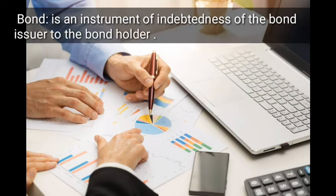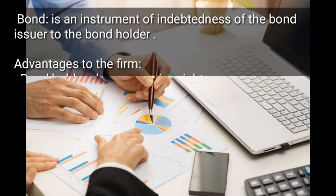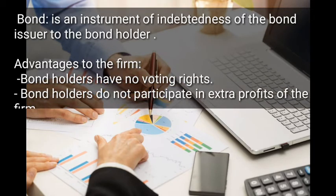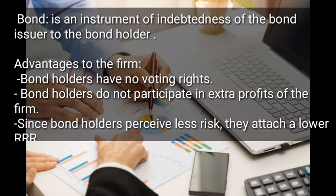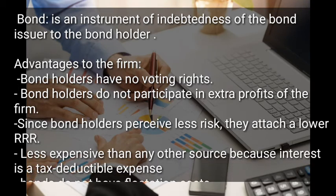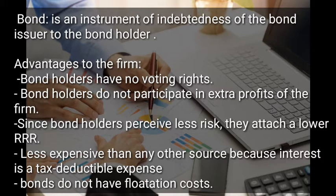Another long-term source of financing is a bond. A bond is an instrument of indebtedness of the bond issuer to the bondholder. Advantages of bonds: bondholders have no voting rights and do not participate in extra profits of the firm since their payments are fixed. Since bondholders perceive less risk, they attach a lower required rate of return. Bonds are less expensive than other sources of finance because interest is tax deductible, and they involve no flotation costs.